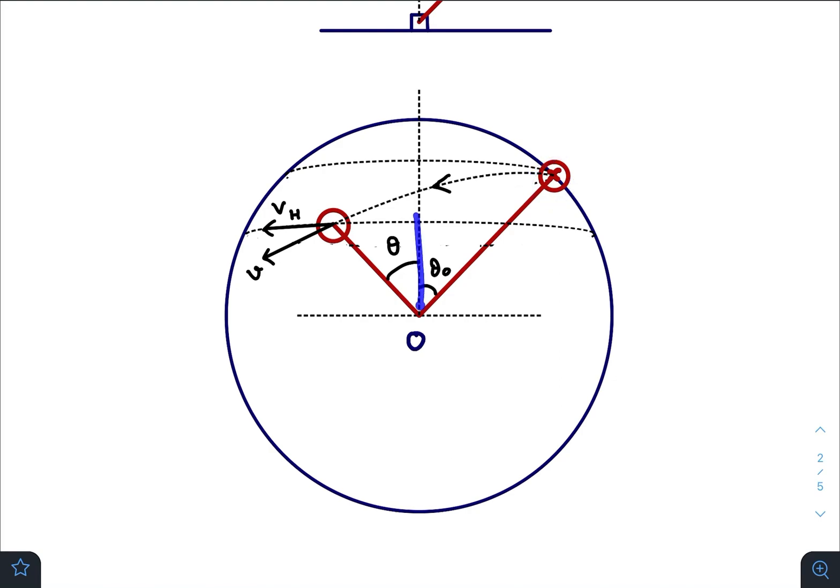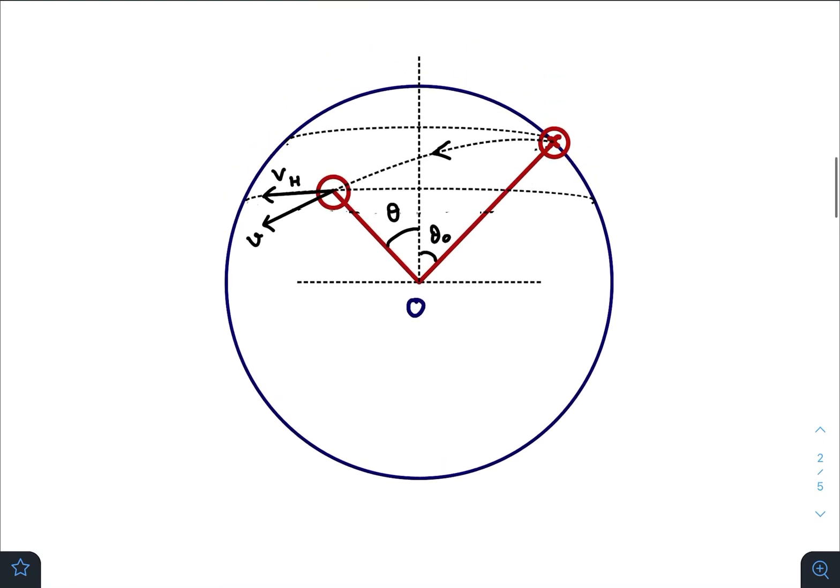At some instant, with the vertical angle θ will be made and the direction of the velocity will be somewhere here, and this would be the horizontal component of the velocity. Horizontal means parallel to this line. As you can see, this one and this one both are perpendicular to the rod because passing through this point there will be infinite number of tangents.